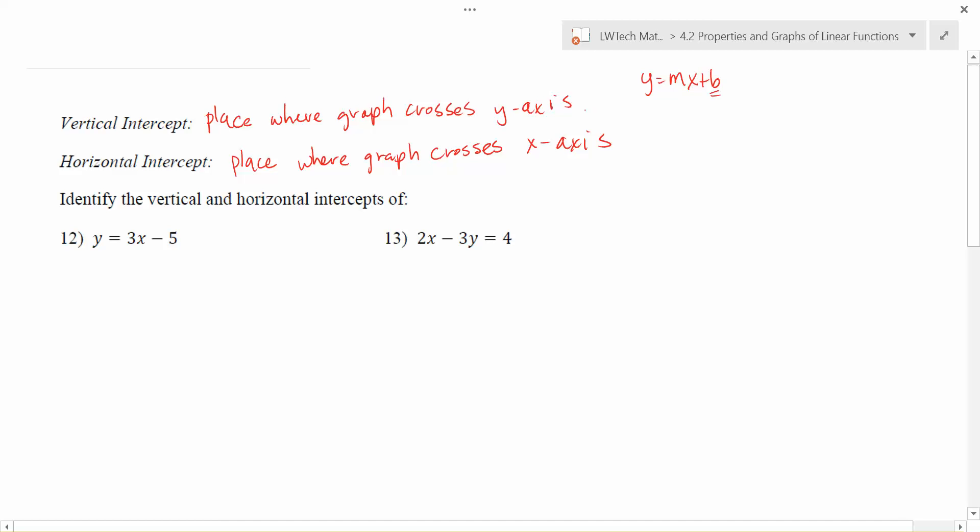Another option that you have to find the y-intercept, which works regardless of if this is a linear function or any other type of function like we're going to cover this quarter, is if it crosses the y-axis, that happens when x is equal to 0. So for the vertical intercept, x is equal to 0, and then you have a y-coordinate, and that's going to be the vertical intercept.